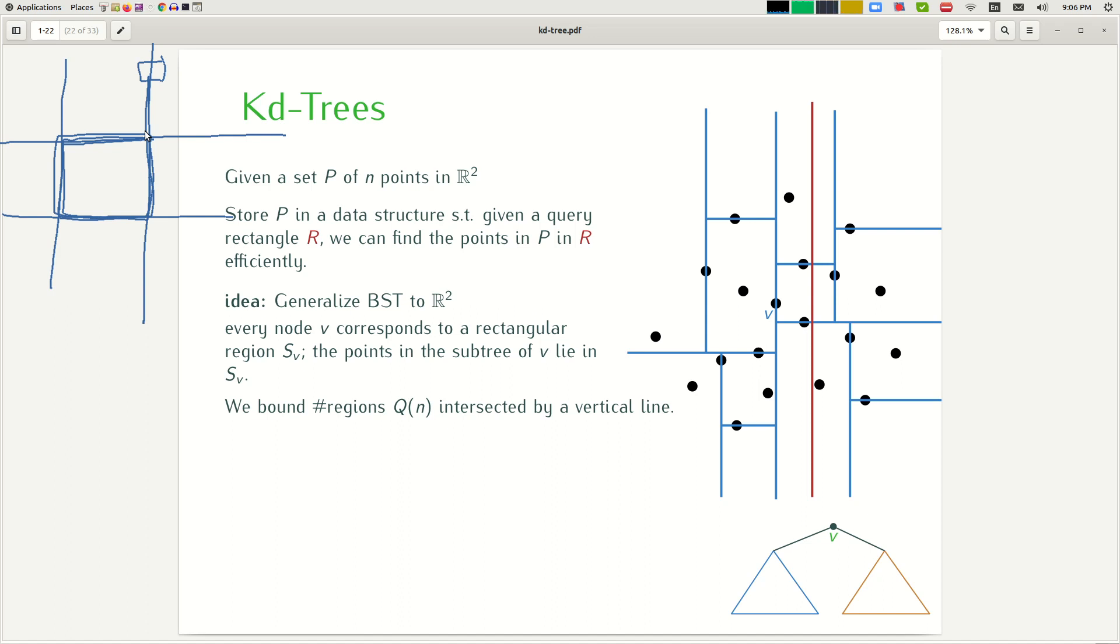Another consequence is that this analysis can be generalized to any query shape that is made by a constant number of horizontal or vertical lines. In other words, if your query looks like this, this analysis applies again, because the number of regions intersected by such a query can be bounded by a constant number of lines that you can draw through this shape. So this analysis is a very general analysis that can be applied to any shape of constant complexity. Therefore, we look at only a vertical line.